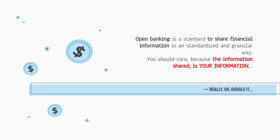The most important thing about what information is being shared is that it is your information. The information shared by open banking is about your accounts, what credit score you might have with an institution, account balance, personal information — and you control who can access it, though also the government could access this information in a more reliable and immediate way.